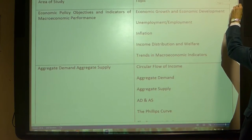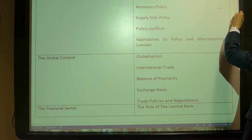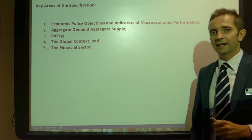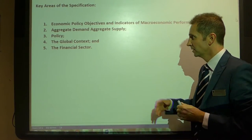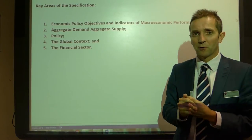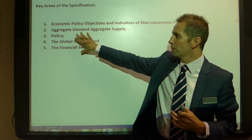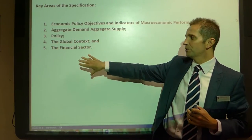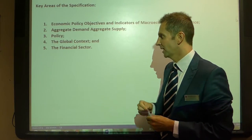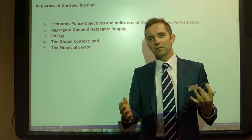Here we have them all — this will be nothing new to you. We have five key areas on the specification: economic policy objectives and indicators of macroeconomic performance; AD and AS — aggregate demand, aggregate supply; government policy; global context; and then this new sector, new for the current A-level specification, with regard to the financial sector.